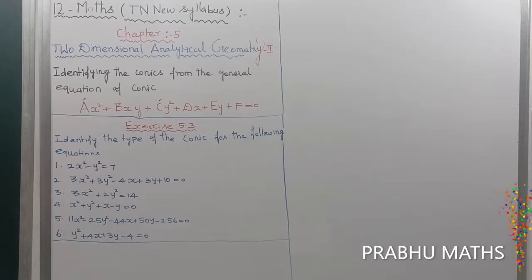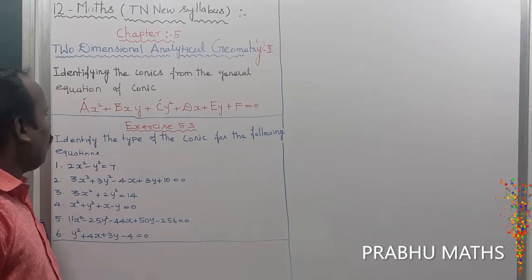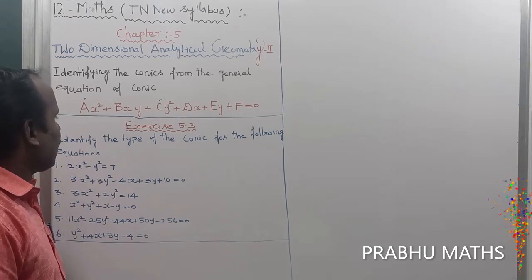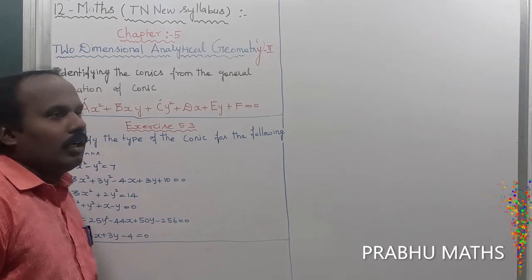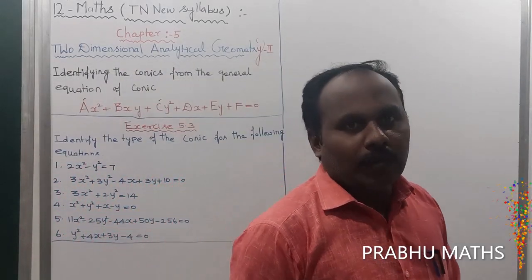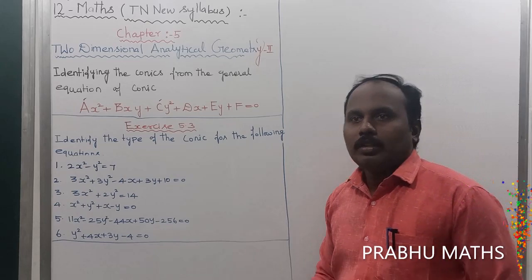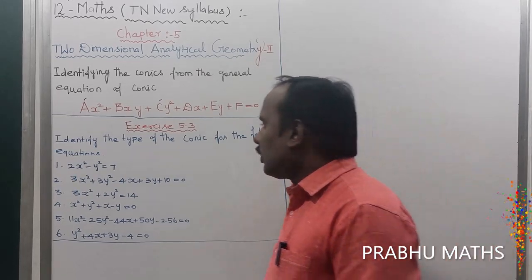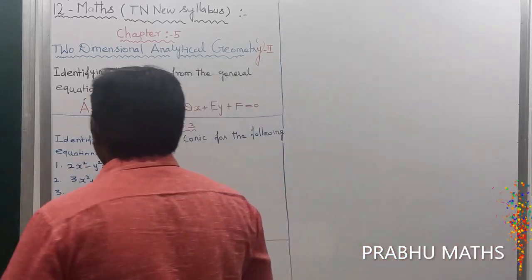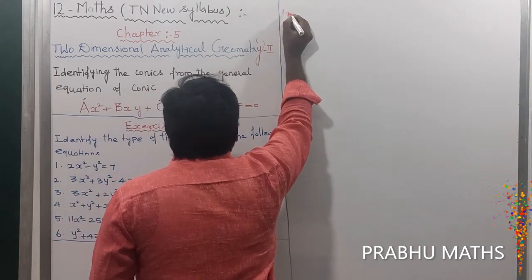x is 5.3, the first sum through to the sixth. Find out the value and name of the conic section — parabola, ellipse, hyperbola, or circle.